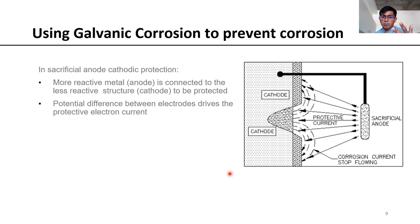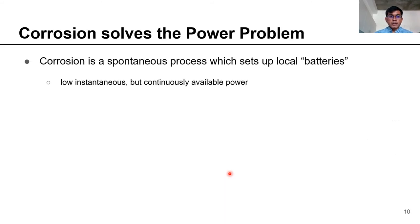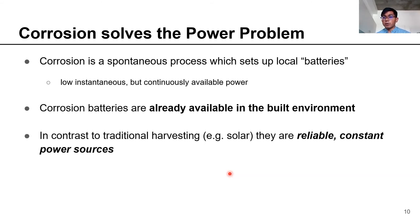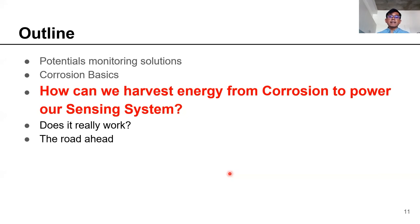The protection capability of the system is determined by the potential difference between the anode and the structure. This physical process gives us a powerful insight: as long as the anode can protect the system, it can power a sensor for on the order of decades. It solves the power problem because it is a spontaneous process setting up local batteries with instantaneously available power. They are built into the environment — requiring no separate infrastructure — continuously available due to the spontaneous nature of the physical phenomenon, and with a long lifetime lasting as long as the anode exists.